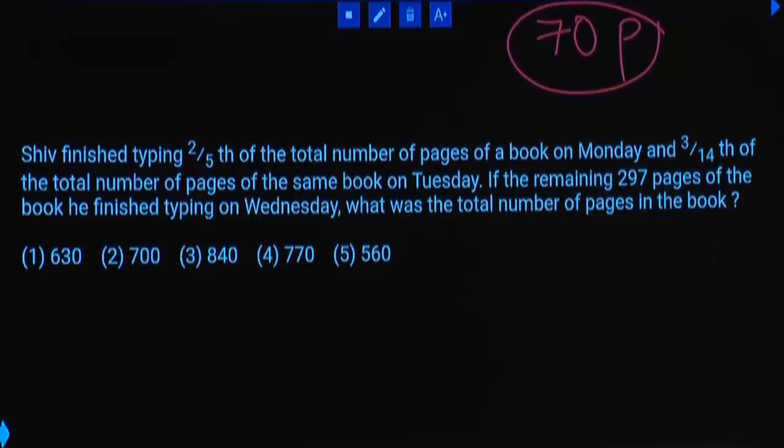Apart from 0, remaining number must be 7 multiple. First option apart from 0, you have 63. That is 7 multiple. Second option you have 70. That is also 7 multiple. Multiple options are there. So we have to start. Out of 5 options, if there is only one 7 multiple, you need not to calculate.